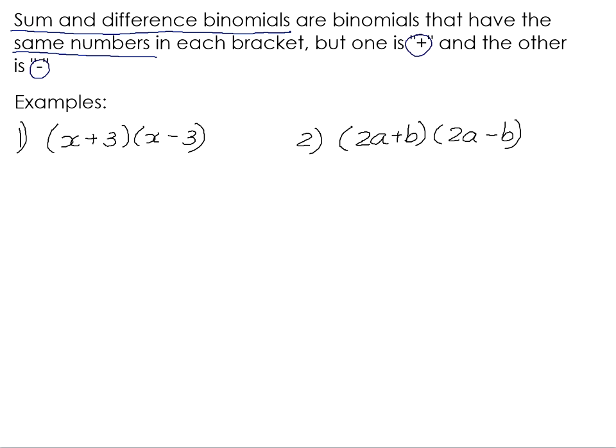So if we have a look at the examples here, x plus 3 and x minus 3. The x and the x are the same. The 3 and the 3 are the same. The only thing that makes these brackets different is the one is a sum and the other one is a difference. The one is a plus and the other one is a minus.